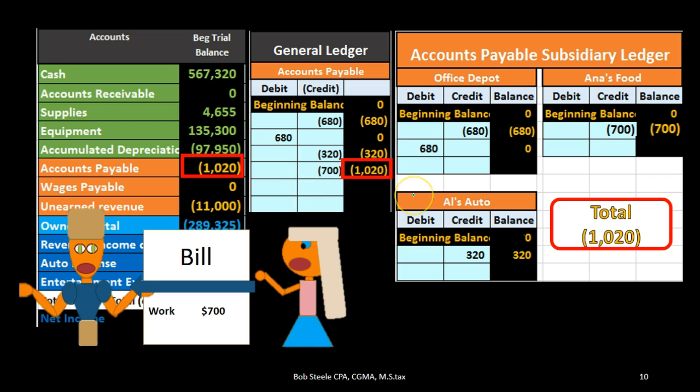The subsidiary ledger is basically the same information as the general ledger, but broken out in a different way — by vendor first and then by date. If we're using computerized systems, this often happens at the same point in time. A computerized system will often not let us post to the accounts payable account unless we assign a vendor, because the system needs a vendor in order to create the subsidiary ledger entry as we post.